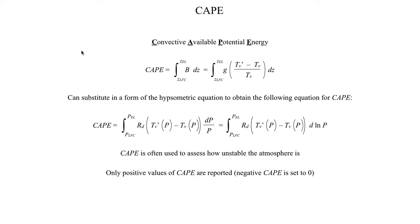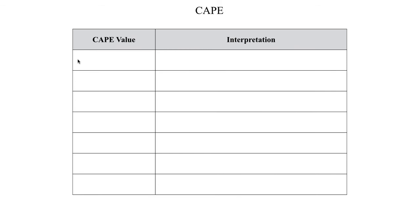That might beg the question: what values of CAPE should we concern ourselves with? I want to make a disclaimer right now — the values I'm about to put up on the screen are not set-in-stone golden standard values. These thresholds are subject to vary depending on certain situations; this is just a general rule of thumb. If you see a number close to the left-hand column of this table, you might start worrying about what's in the right-hand column, but it doesn't guarantee you'll get that outcome.